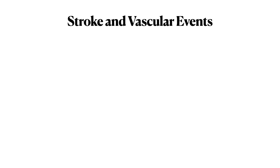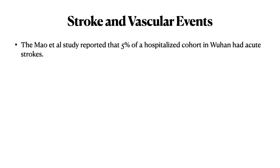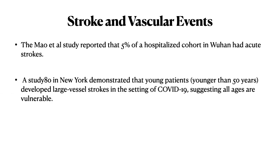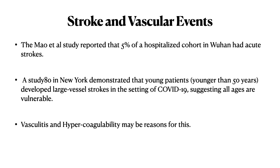Another presentation is stroke and vascular events. In a study from Wuhan, 5% of hospitalized patients were reported to have acute stroke. In another study of young patients from New York, patients less than 50 years of age developed large vessel strokes from COVID-19 infection, suggesting that all ages are equally vulnerable. Vasculitis and hypercoagulability are the most likely reasons for these stroke and vascular events.